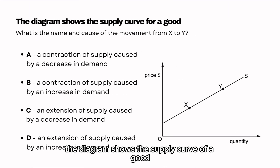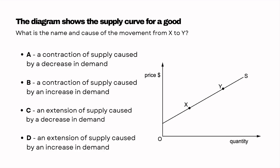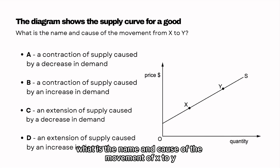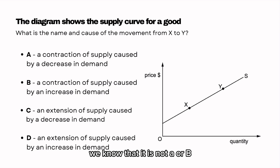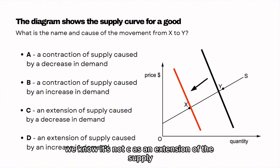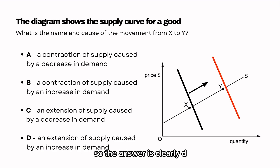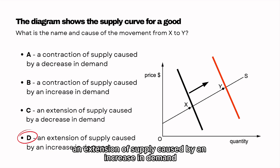The diagram shows the supply curve for a good. What is the name and cause of the movement from X to Y? We know that it is not A or B as X to Y is an extension. We know it is not C as an extension of supply is definitely not caused by a decrease in demand, as the result of this will cause it to contract. So the answer is clearly D — an extension of supply caused by an increase in demand.